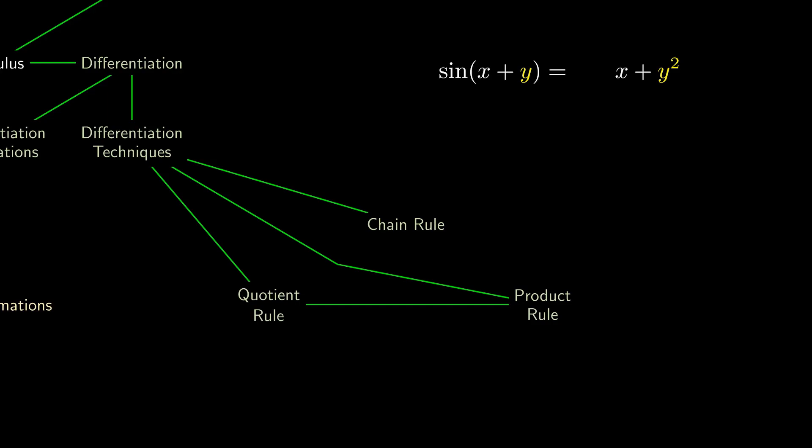The chain rule helps us differentiate on both sides, where we differentiate layer by layer. Differentiating the outside, we get cosine, and differentiating the inside, we get 1 plus the derivative of y with respect to x.